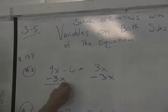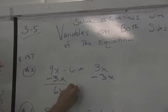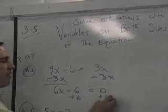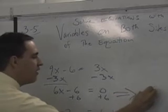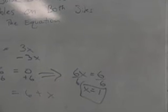So what is 9x minus 3x? 6x. Then we've got 6x minus 6 equals 0. We add 6, and we're almost home free. I'm going to put an arrow to show it. 6x equals 6, divide by 6. Everybody knows how to do that. x equals 1, we're done.